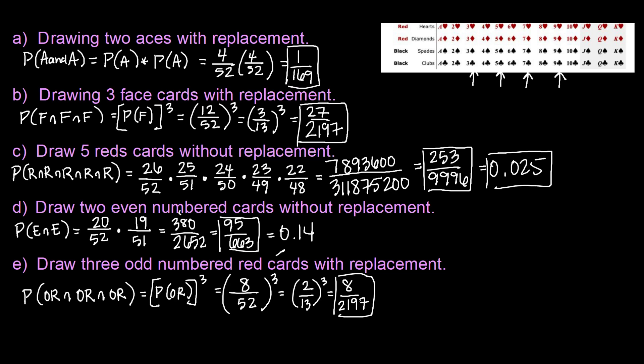Converting that to a decimal approximation, that would be 0.0036. Alright guys, that does it for this video on the multiplication rule using a standard deck of cards. Until next time, we'll see you later.